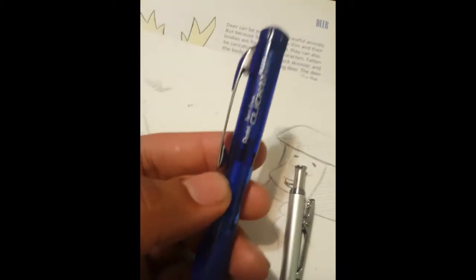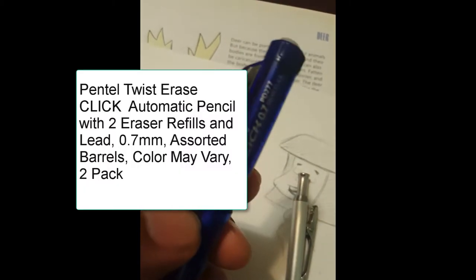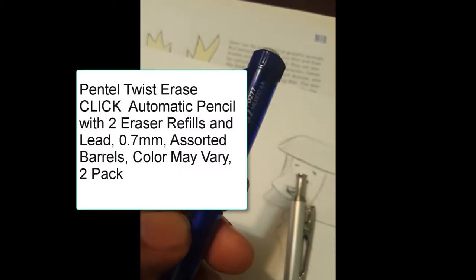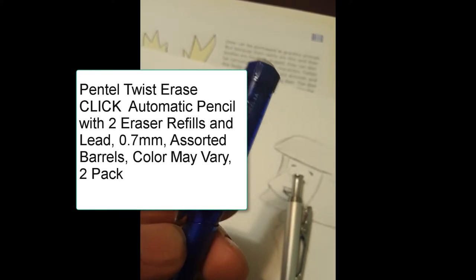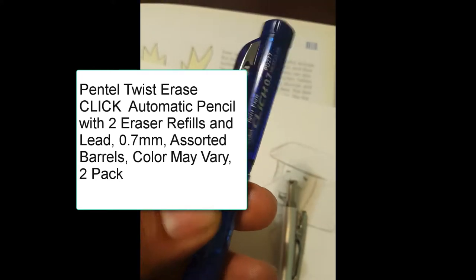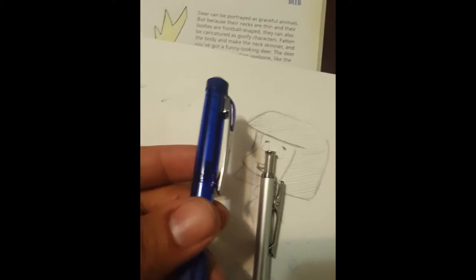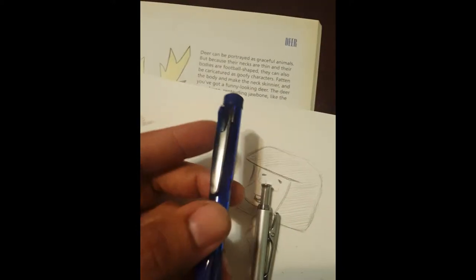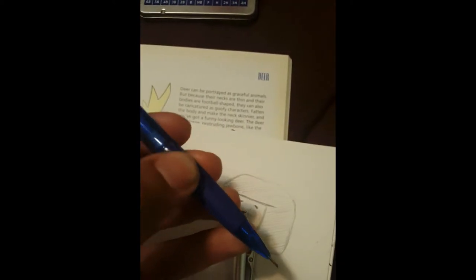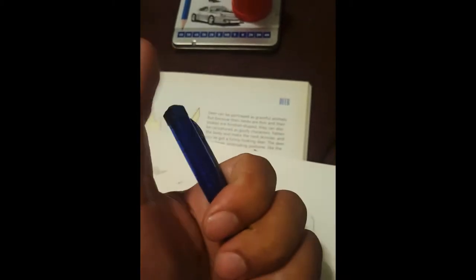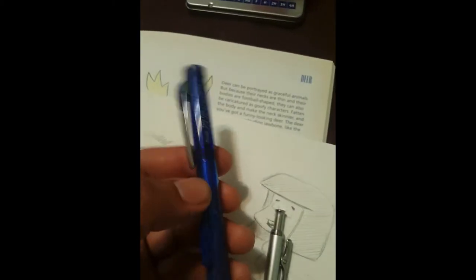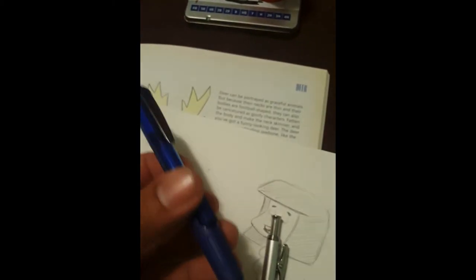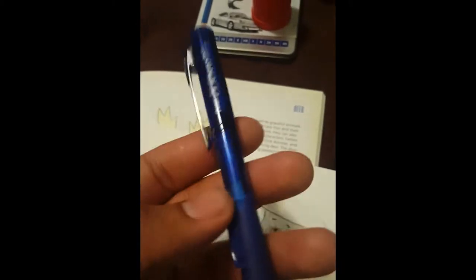So I have my Pentel twist erase click 0.7 here. This one is actually, it's cheaper out of all the other ones I have. I think I can post links to everything to be sure. I'm not used to using like these click kinds of pencils when it comes to art supplies. A lot of them just have like the top that clicks, or mechanical pencils I should say.